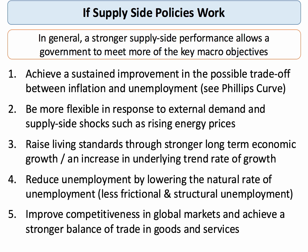If supply side policies work, it's much easier for governments to achieve their key macroeconomic policy objectives over time. They can, for example, improve the trade-off between inflation and unemployment. Stronger supply side performance makes the economy more resilient to external shocks such as changes in the world price of oil and other commodities. Per capita income should increase in real terms and the economy can sustain a faster trend rate of growth. If labour market policies work, we can get unemployment down by reducing the level of frictional and structural unemployment. Improved supply side performance should also help a country achieve a stronger balance of trade in goods and services. The key is to get the combination of policies right to achieve the desired aims.